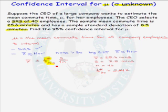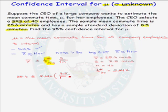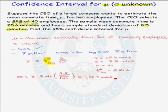We are ready to put these values into the confidence interval. Our confidence interval will be 25.6 plus or minus 2.042 multiplied by 8.5 divided by the square root of 40. Putting this into the calculator, we find that our 95% confidence interval is 22.9 minutes up to 28.3 minutes.